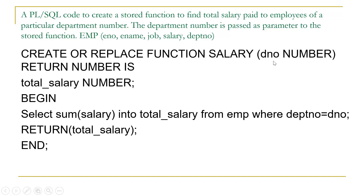It is important to note that the parameter d_number is of IN type, because by default all parameters are of IN type. So we are passing the value of the department number, and the function will return the total salary of employees working in that department number.